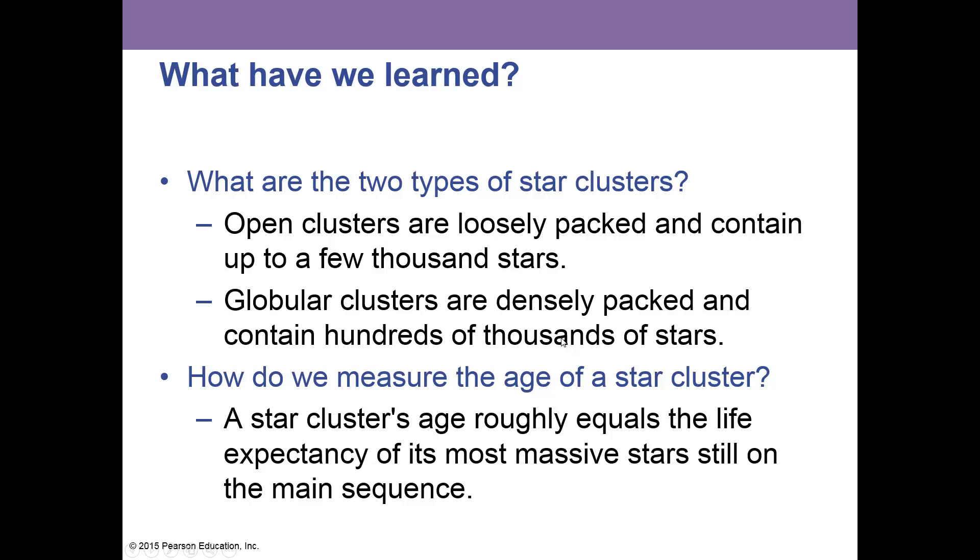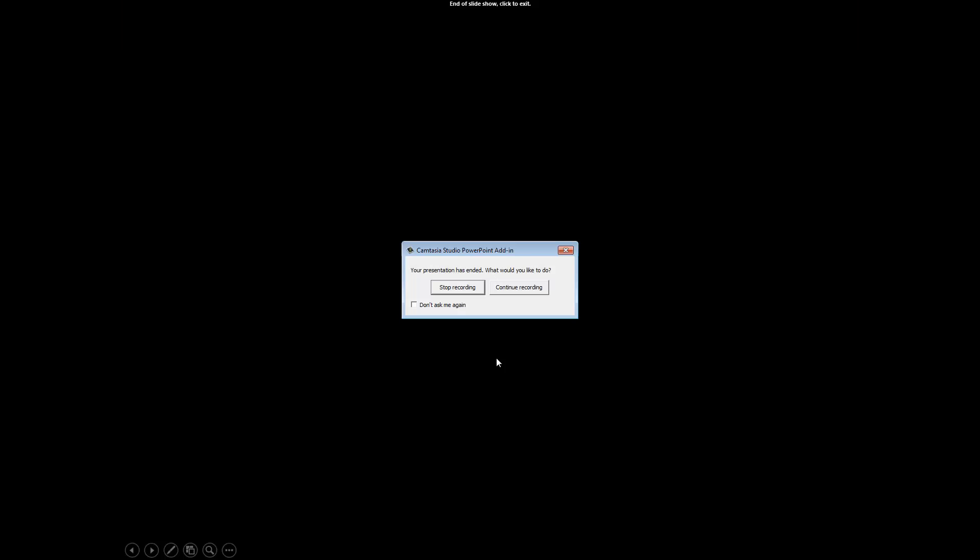We have open clusters that are loosely packed, containing a few thousand stars. Globular clusters are densely packed and contain hundreds or thousands of stars. Globular clusters are golden. Thank you.